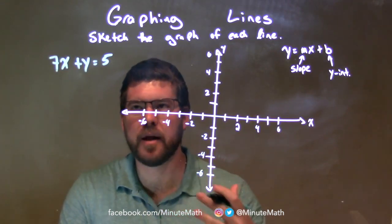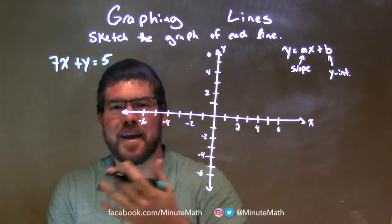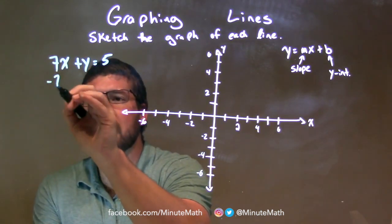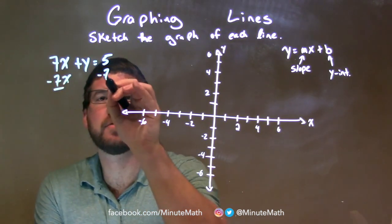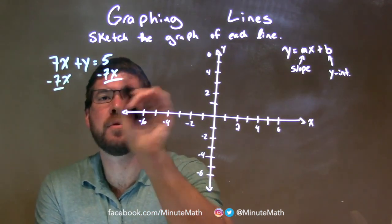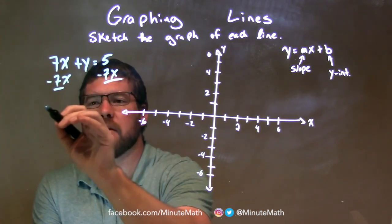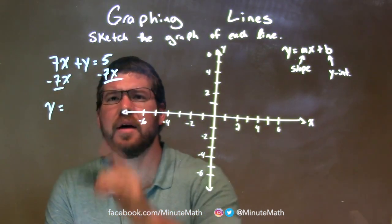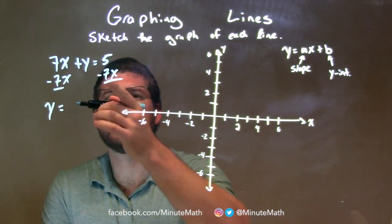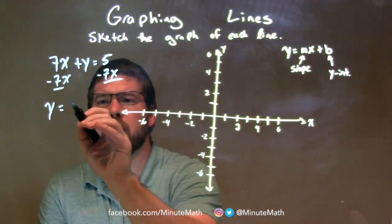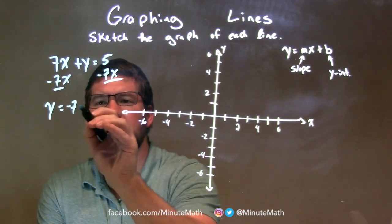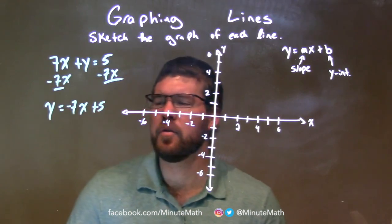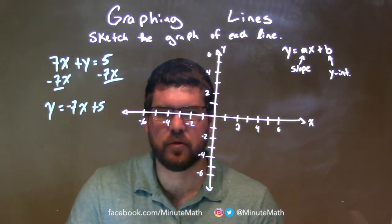I like to rewrite this. To do that, I need to get y by itself. I'm subtracting 7x from both sides, and that makes y by itself. So y equals 5 minus 7x, which is the same thing as negative 7x plus 5. Now I have y equals negative 7x plus 5.